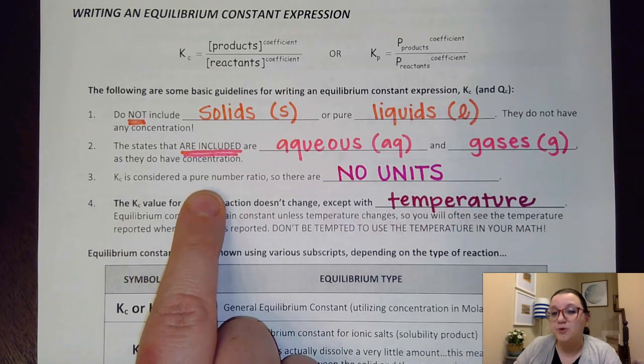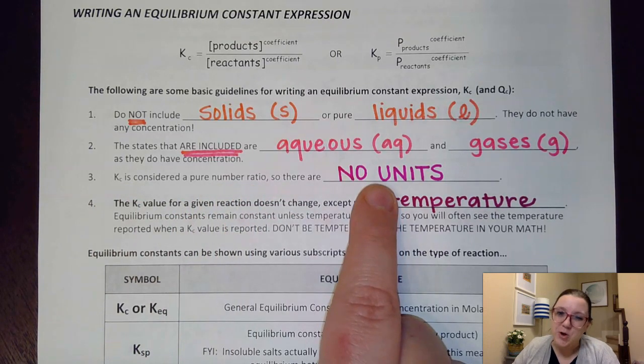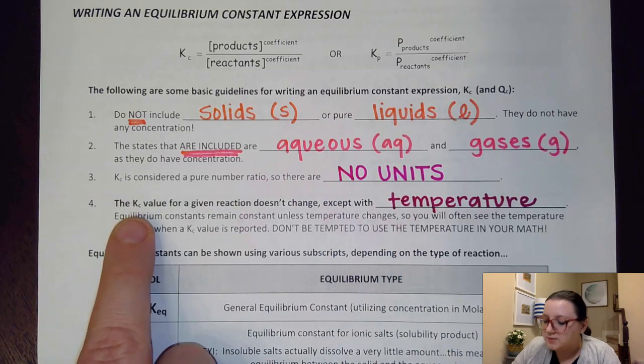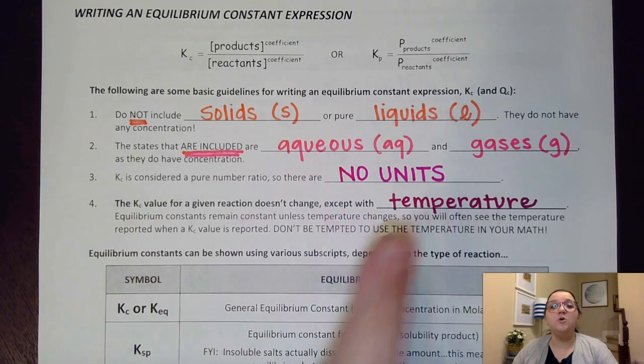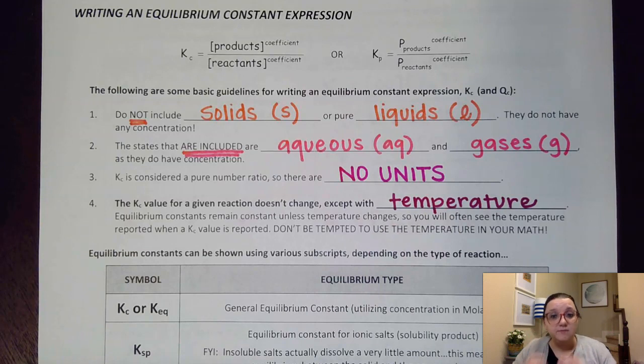Now, the Kc value is considered a pure number ratio. So conveniently, there are no units. Also, the Kc value for a given reaction doesn't change, except with temperature. So for a given reaction, you will always have a consistent Kc value at a particular temperature. And usually, you can look up the Kc value for a reaction at standard SATP conditions, 25 degrees Celsius, on standard tables. However, if the temperature changes, then the Kc value ends up being different.